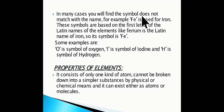In many cases, you will find the symbol does not match with the name. For example, Fe is used for iron. The spelling of iron is I-R-O-N, so its symbol should be I. But it is different because these symbols are based on the Latin names of the elements. Ferrum is the Latin name of iron, so its symbol is Fe. Some other examples are: O is the symbol of oxygen, I is the symbol of iodine, and H is the symbol of hydrogen.